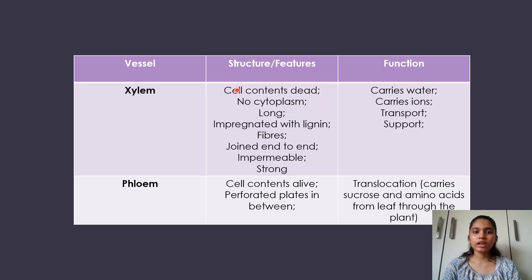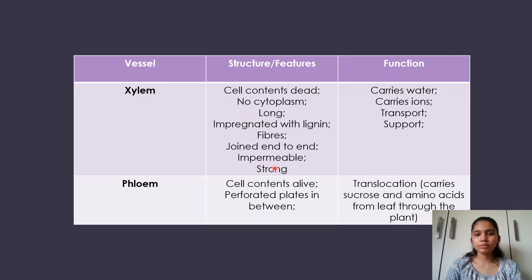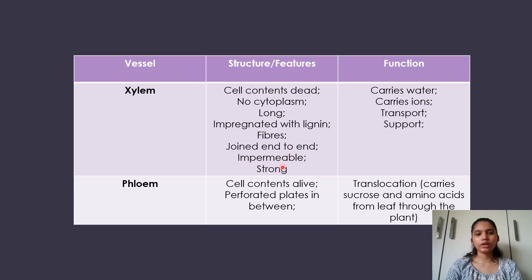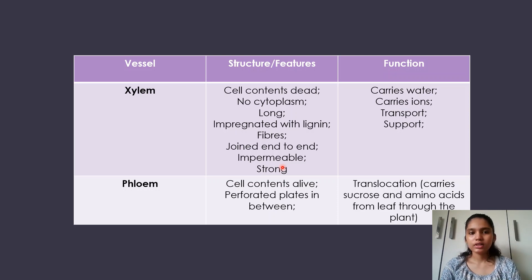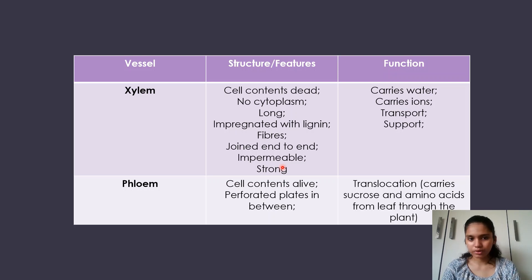The xylem has the capacity to be used as support — it helps support the plants. The cell contents (cytoplasm) die to allow the free passageway of water. It is long to carry water over long distances, impregnated with lignin to make it impermeable and strong, and there are fibers present. It is joined end to end as one continuous fine tube. Its functions are: carries water, carries ions, and provides support.